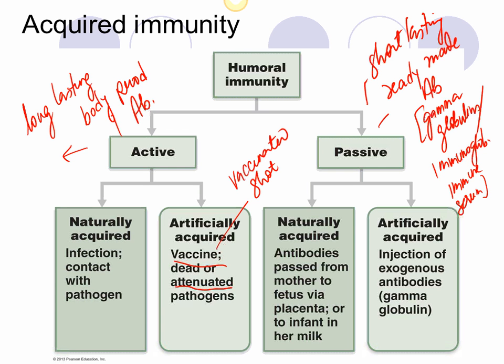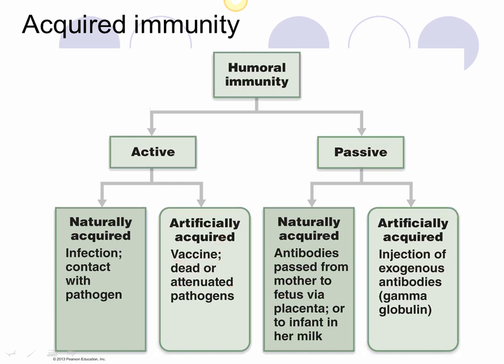You might wonder: if active immunity is long lasting, why do we need a flu shot every year? The difference is that there are many strains of influenza virus. Every year, scientists predict which strains are likely to strike and make a vaccine based on those strains. What you took last year may not cover the same strains as this year — that's why you take an annual flu vaccine. Terms used for artificial active immunity include: shot, vaccine, and immunized.